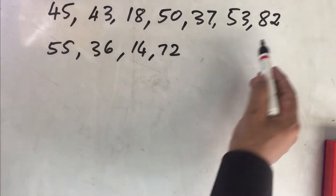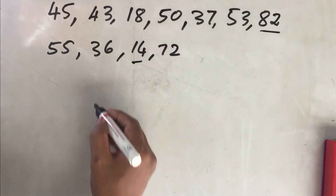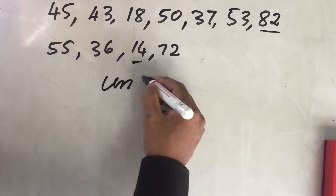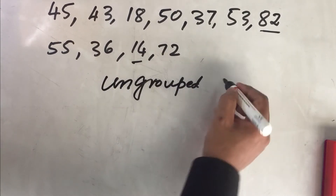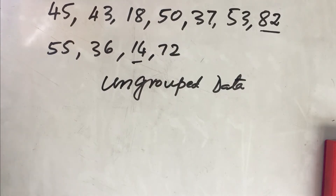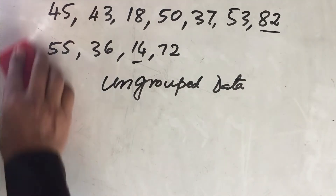The smallest number here is 14 and the highest is 82. This kind of arrangement of data is what we call ungrouped data. Later on we will see how to arrange this ungrouped data further.